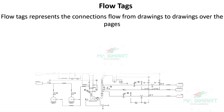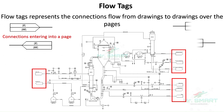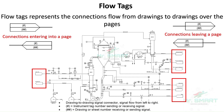Flow tags are the next important thing to know in P&IDs. A flow tag tells us the connection flow from drawing to drawing. They tell us both the connection entering into or leaving the page, with instrument tag and sheet number of its origin. With this, you can actually track the connections across the drawing and the entire P&ID of your plant.